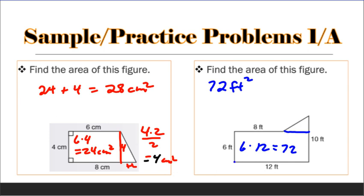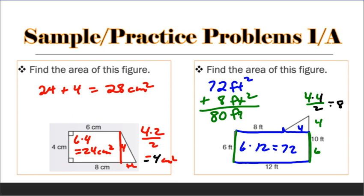And then if this whole bottom is 12, and this part is 8 right here, this has to be 4. And if this whole thing was 10, this part and this part is 6. So if this is 6, this has to be 4. So 4 times 4 is 16, divide by 2 gives you 8. So I'm going to add 8 square feet to it. You're going to end up with 80 square feet as the area of that figure.